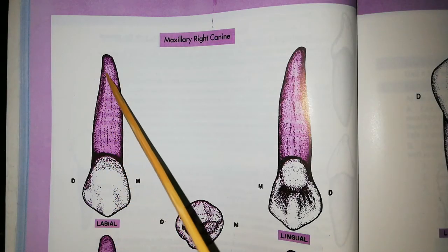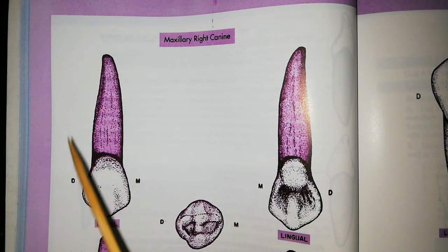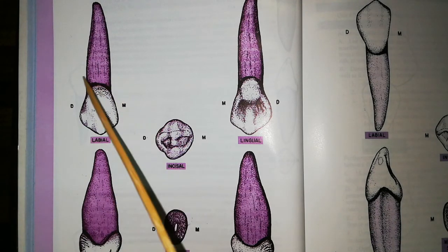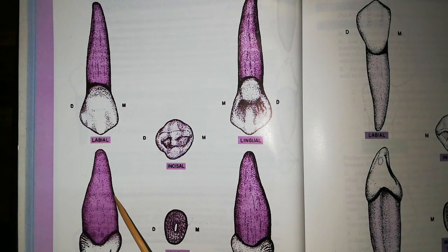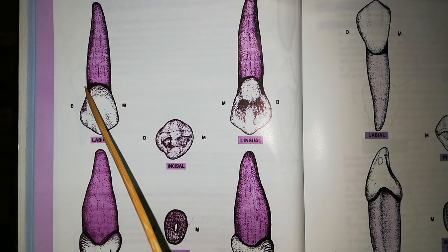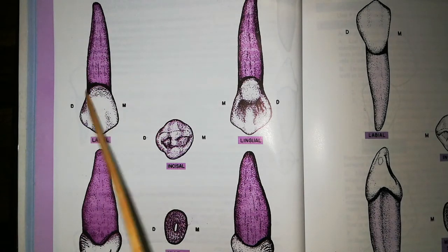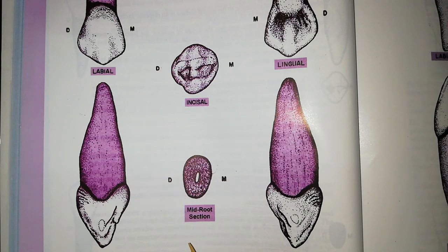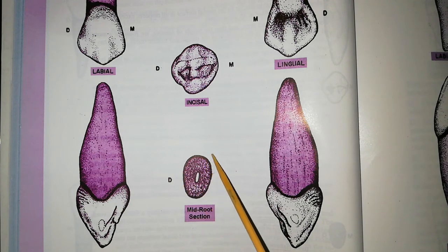The root is single and has a sharp apex. It is also the longest root of any tooth in the mouth. The root is wider labiolingually than it is mesiodistally. The labial and lingual surfaces are convex while the mesial and distal surfaces are either convex or slightly flattened. The mid-root cross section shows that the root is wider labiolingually than mesiodistally, and wider mesiodistally towards the labial surface and narrower towards the lingual surface.